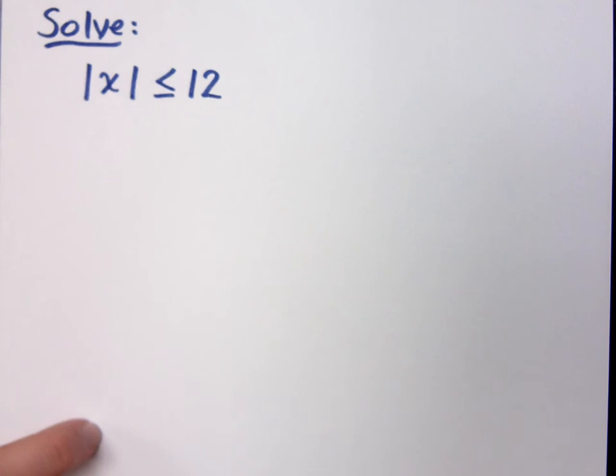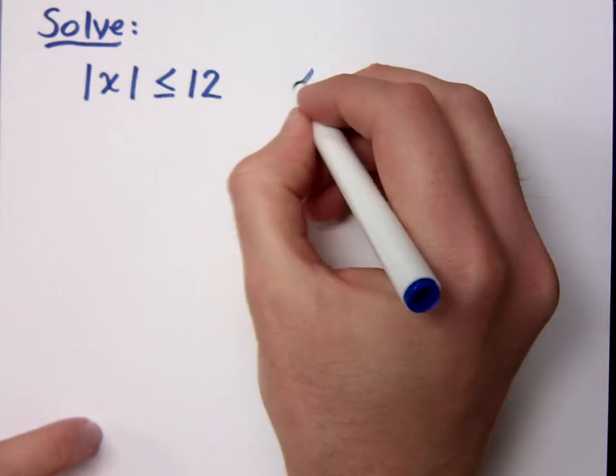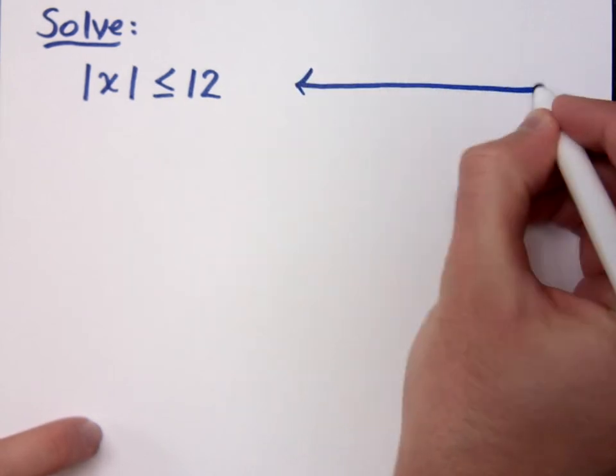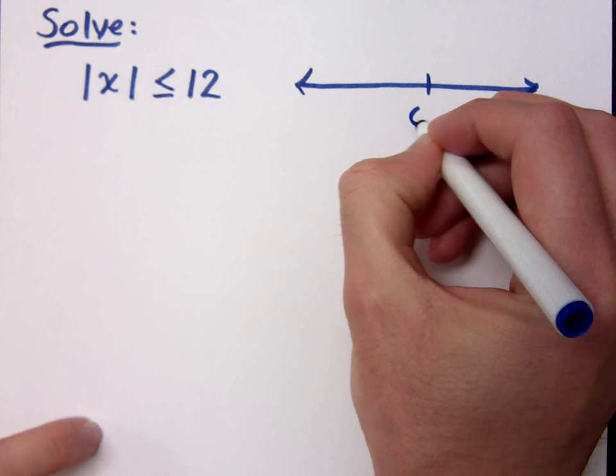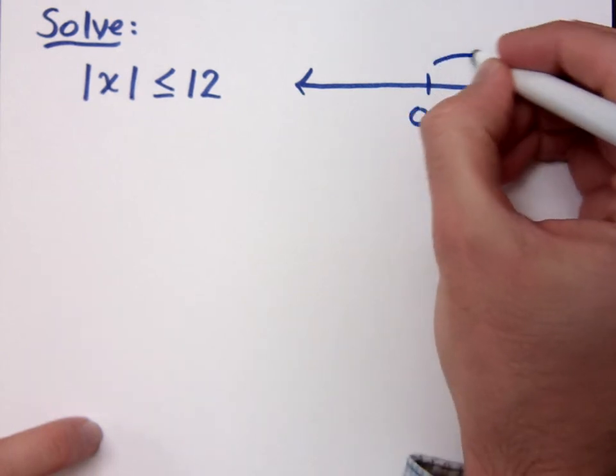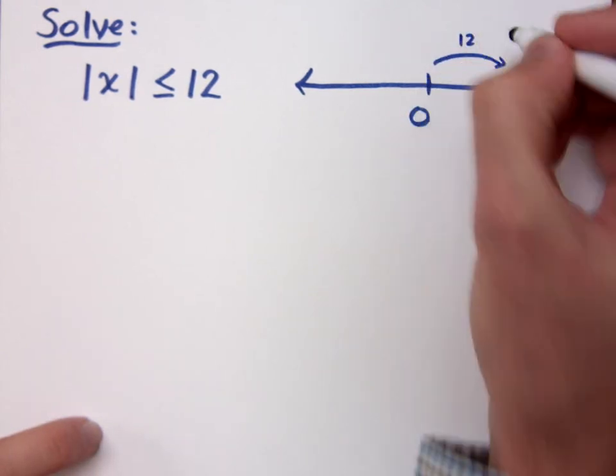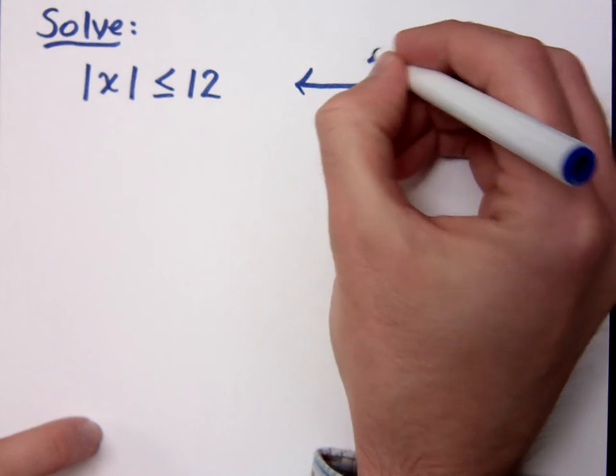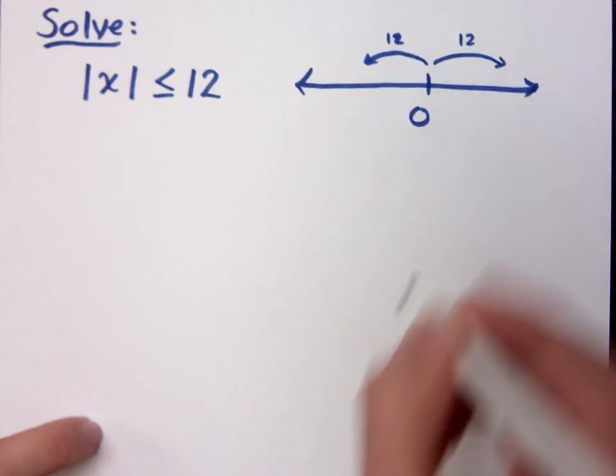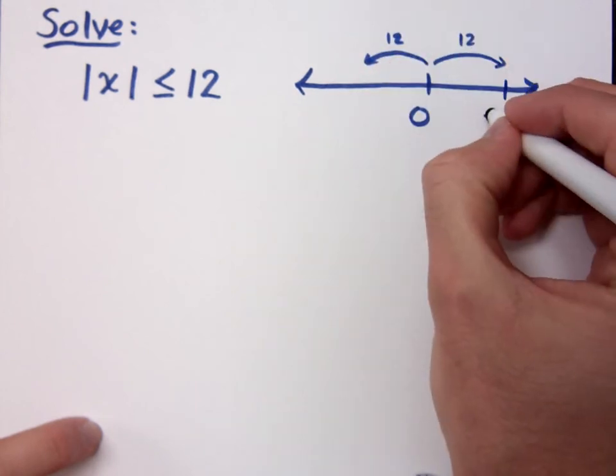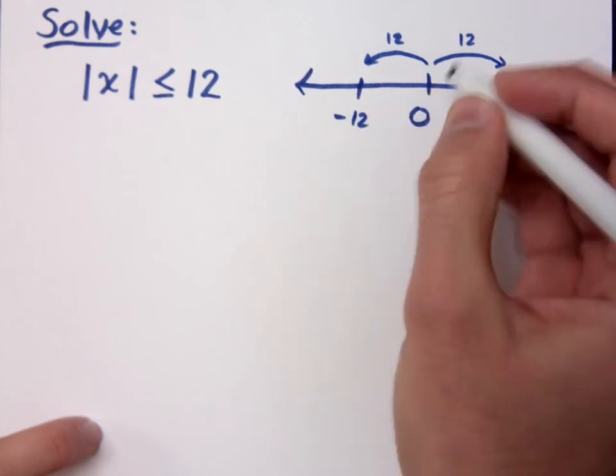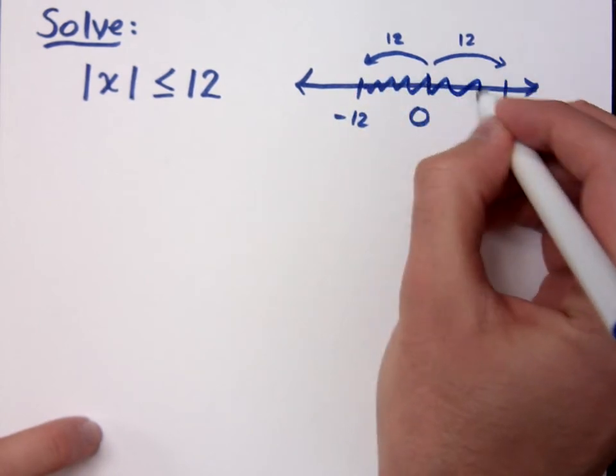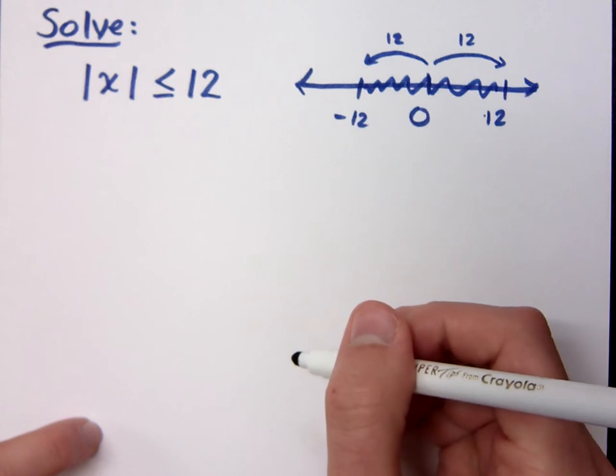We want to see how we can write that using the properties that we saw a few videos ago. So when you look at this, if you look at this on a number line, here's zero. I want anything that is within 12 units this way and 12 units this way. So that means between 12 and negative 12, these values right here are the ones that make sense.